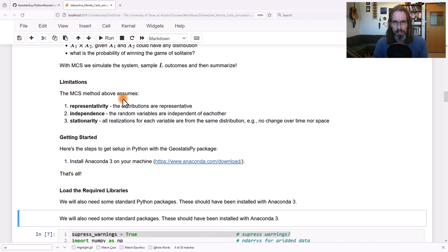Limitations, MCS methods, they assume representativity. The distributions, we're going to assume the f(x)'s are representative. So if there's bias, there's too few samples and so forth, yes, you need to have representative, enough samples to observe. Independence, the random variables are independent from each other. We're going to draw from x1, x2, x3 independently. Now there are methods to impart correlation. That's not something we're going to cover right now. And stationarity. The realizations from each variable or each feature, they have the same distribution over time or space. They're not changing over time or space.